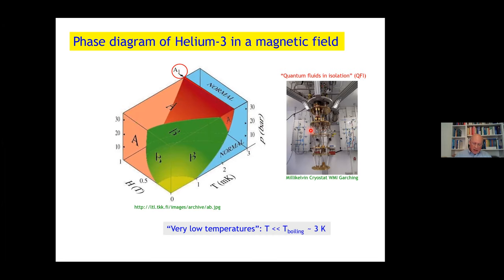Such low temperatures can only be achieved by sophisticated techniques. I show you the millikelvin cryostat at the Walther Meissner Institute for Low Temperature Research in Garching. This seminar is called quantum fluids in isolation. This inside is a quantum fluid in isolation in the perfect sense because you need very good thermal isolation. We speak of very low temperatures when temperatures are much lower than 0.3 Kelvin.